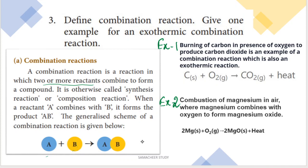When reactant A combines with reactant B, it forms product AB — this is a combination reaction. Exothermic means heat is released outward (exo = out, thermal = heat). An example of an exothermic combination reaction is the burning of carbon in the presence of oxygen to produce carbon dioxide: C + O2 → CO2 + heat.